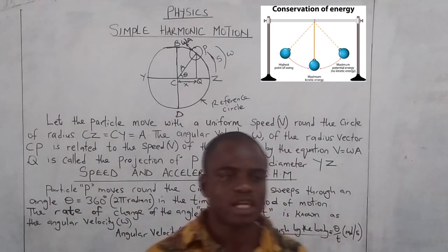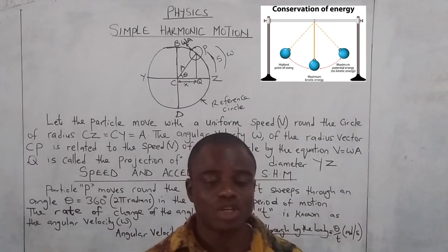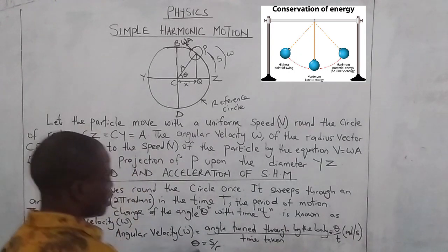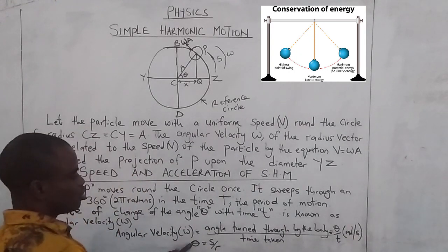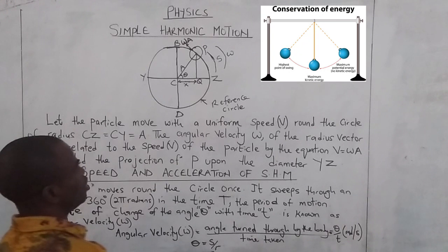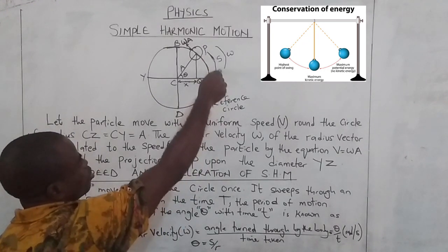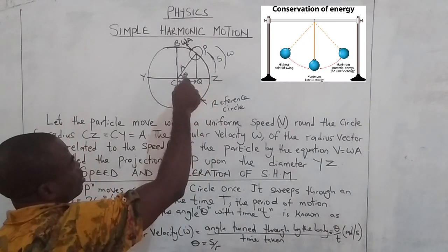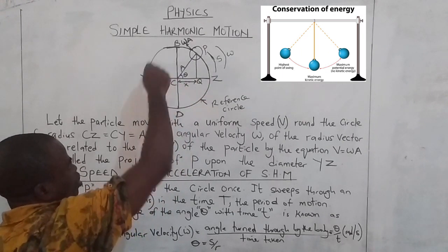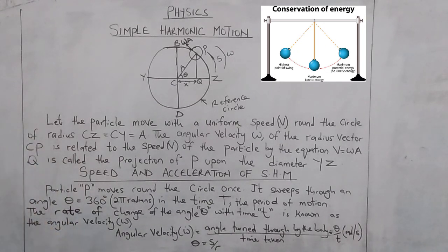Take note: under linear velocity, the unit is meters per second, but when dealing with angles, you refer to radians per second. And theta, the angle turned through by the body, equals distance over radius — that is, s over r — where the distance s is how far the object moves and r is the radius of the circle.